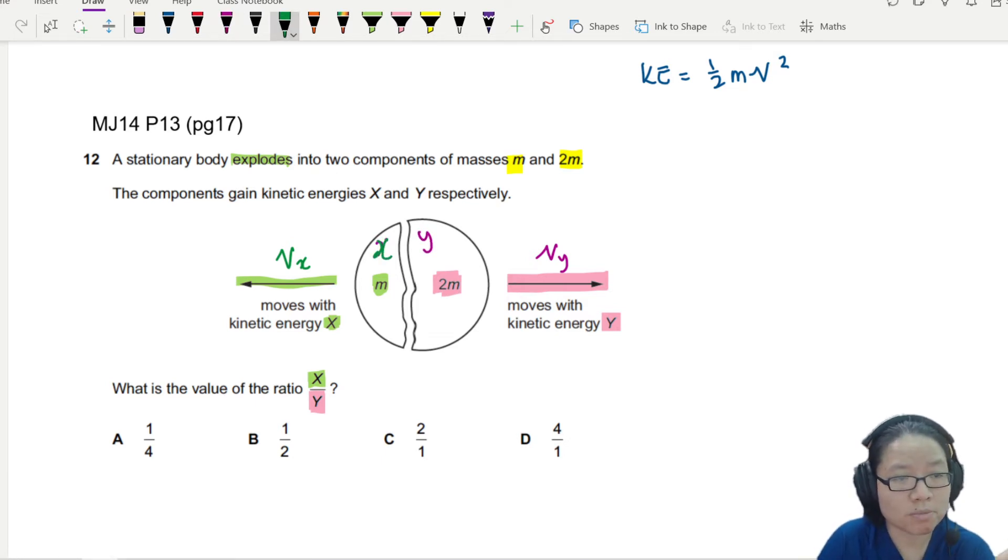So the momentum of x, Px, is in this direction. And of course, if I want to find this, Px is m Vx. And then, I know that y has a certain momentum. So the momentum of y will be 2m, because it's double the mass, Vy.